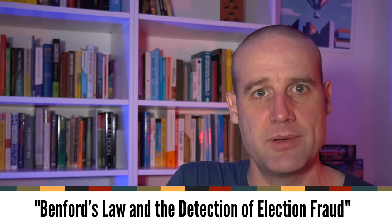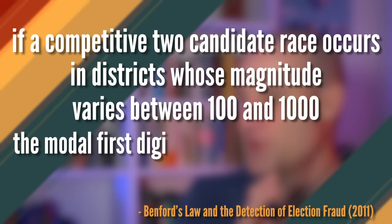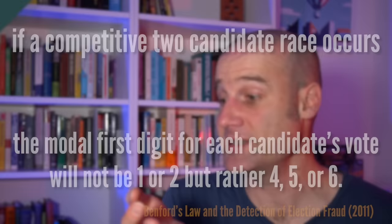At the beginning of the video, I had a very short quote from Benford's Law and the detection of election fraud. And if people actually read through that paper, it describes exactly this. Part way down it says, if a competitive two candidate race occurs in districts whose magnitude varies between 100 and 1000, the modal first digit for each candidate's vote will not be 1 or 2, but rather 4, 5 or 6. And this is exactly what we're looking at here. The paper describes this exact situation and says how normal it is. I'll link to the paper below if you want to check it out.